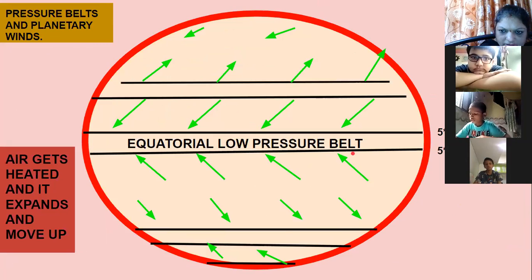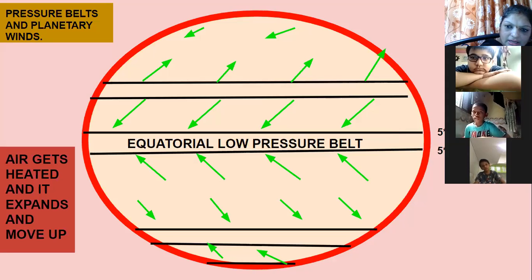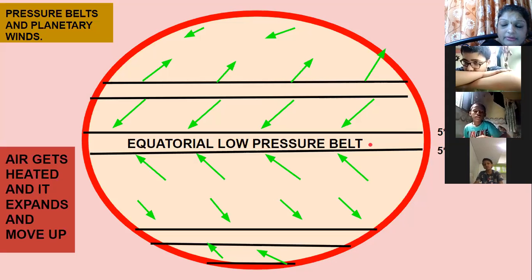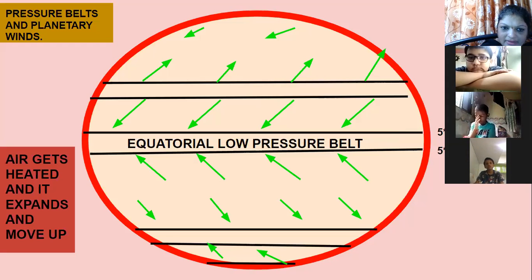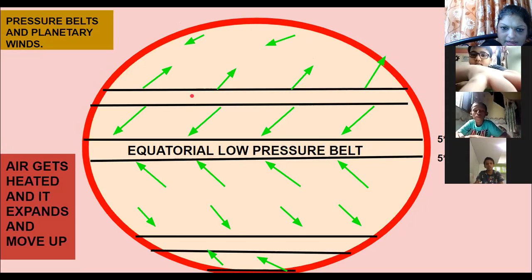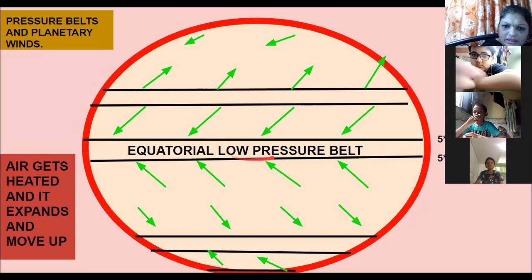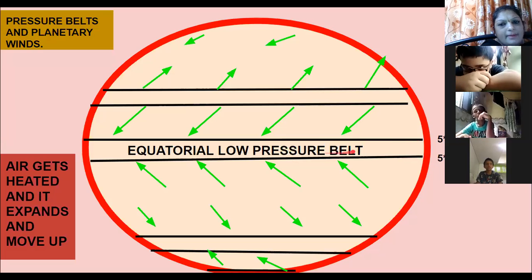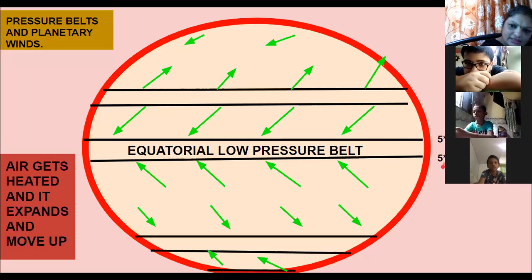The equatorial low pressure belt is formed near the equator. Why? Because the rays of the sun are perpendicular, temperature is high, air gets heated up, becomes lighter in weight, expands, and moves up. When the air moves up, the pressure becomes low. So near the equator, a low pressure belt is formed. The extension of the equatorial low pressure belt is from 5 degrees north to 5 degrees south.